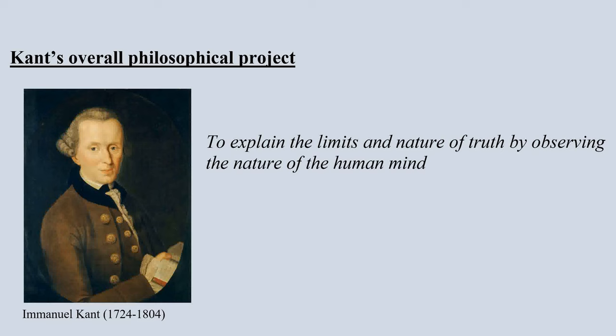So who was Immanuel Kant? Immanuel Kant was the most influential philosopher of the modern period, which means really up until today, and he was obsessed with the idea of explaining the limits and nature of truth by observing the nature of the human mind.